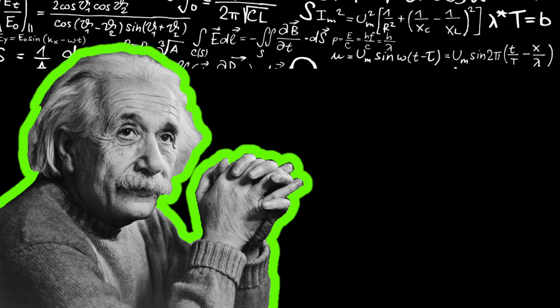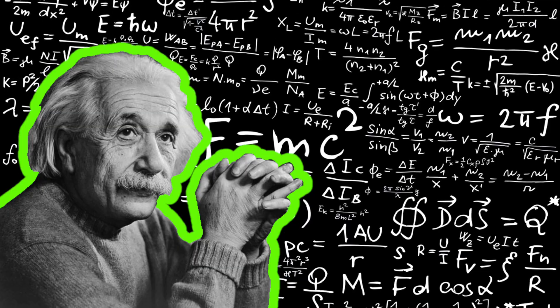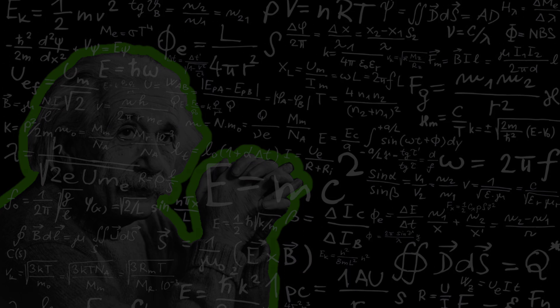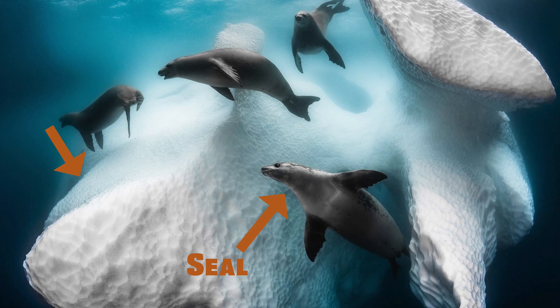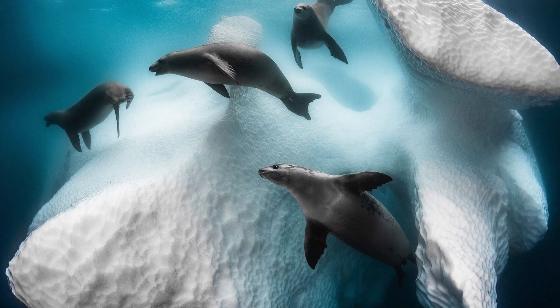Then, he derived how big atoms should be based on how much the Brownian particles move. It's like estimating the size of a seal by looking at how much icebergs get jiggled by the seals.